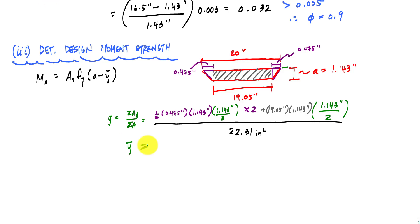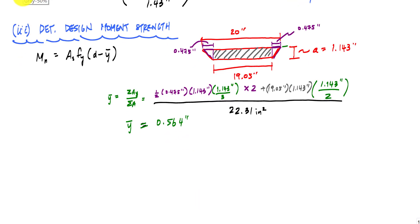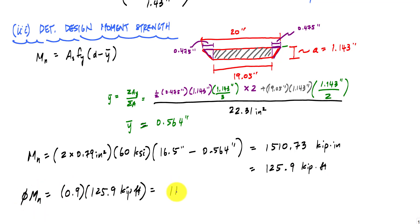Area of the rectangle, which is base times the height and the centroid of that rectangle. Total area in compression is actually, we already calculated that before, that area in compression is this 22.31 inches squared. And when I go through and I plug and chug, I will get Y bar 0.564 inches like this. And now I can calculate the nominal moment MN, which is 2 times, the area of steel is 2 times 0.79 inches squared times 60 KSI times D, which was 16.5 inches minus Y bar 0.564 inches. And this will give me a nominal moment of 1510.73 kip inch. And if I convert this to kip feet, or I divide it by 12, this will be 125.9 kip feet. The design moment strength, phi MN, will be 113.3 kip feet. And done.